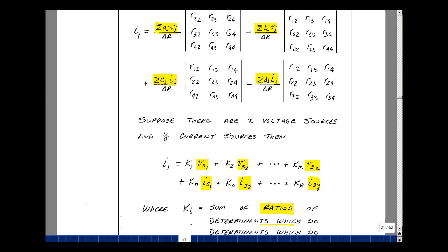So I'd have I1 as something times V sub S1 through X voltage sources. And the same is true if I had Y current sources. I'd have some scalar, which is the ratio of determinants, times the current sources that I have, say if I had Y of those.